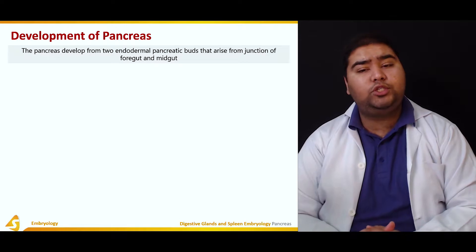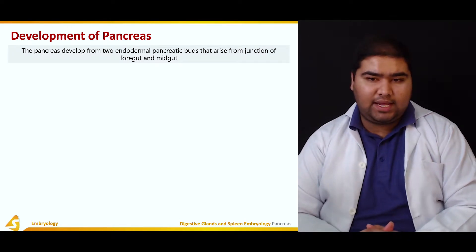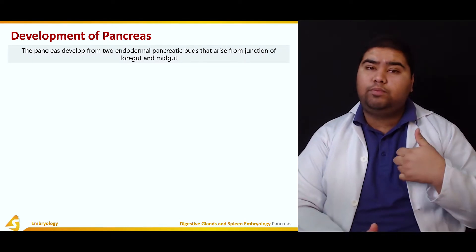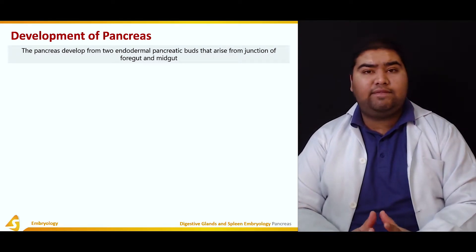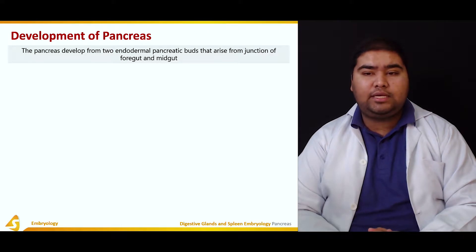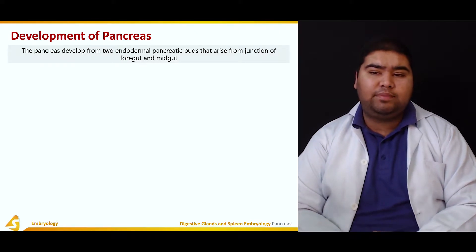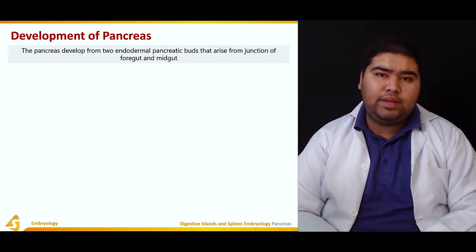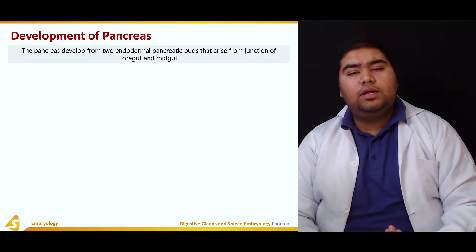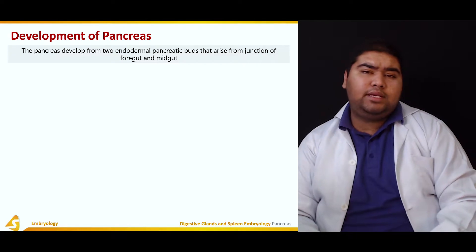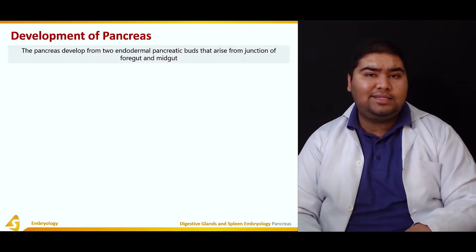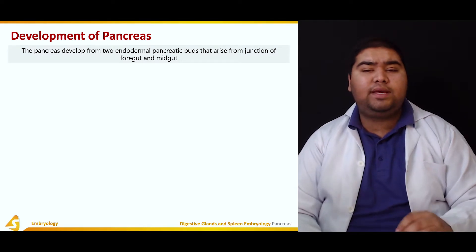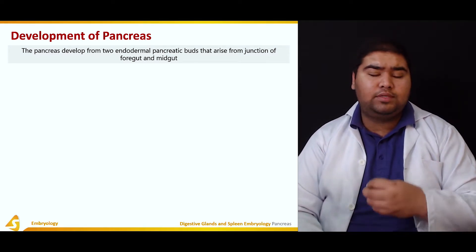The pancreas develops from two endodermal pancreatic buds — so the important thing is that they are endodermal buds. These pancreatic buds arise from the junction of the foregut and the midgut, which is known as the anterior intestinal portal. It is at this site that two pancreatic buds are formed.